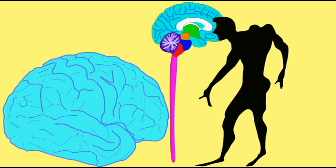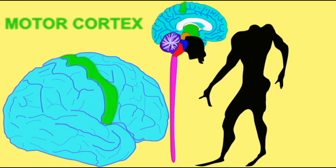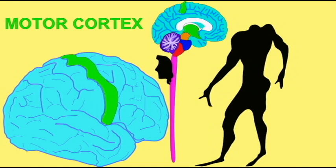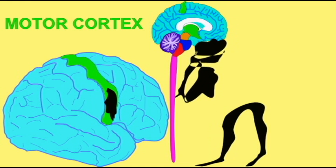Anterior to the central sulcus, there is a gyrus known as the motor cortex of the frontal lobe. This is where there is a map of the body which allows the voluntary control of skeletal muscle movements.